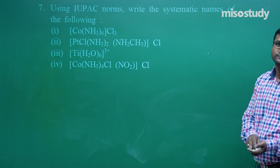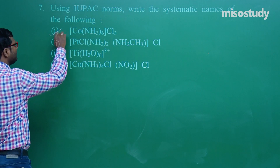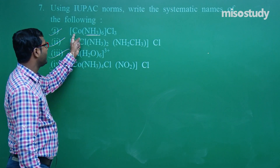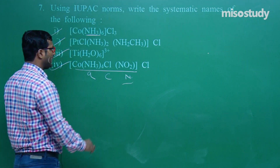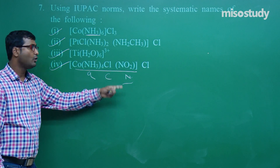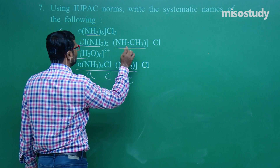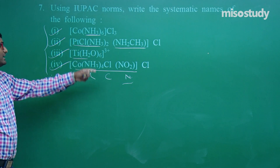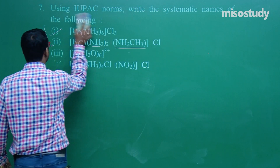The next question involves IUPAC nomenclature — I am leaving this for you to solve. We have done lots of practice on this. Example: hexaaminecobalt(III) chloride. In alphabetical order A, C, N — so tetraaminechloridonitrido cobalt(III) chloride. This one contains methylamine. You can easily solve these questions.